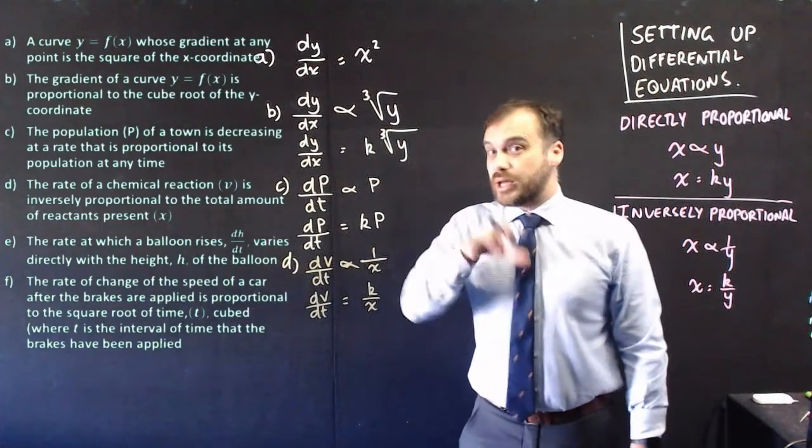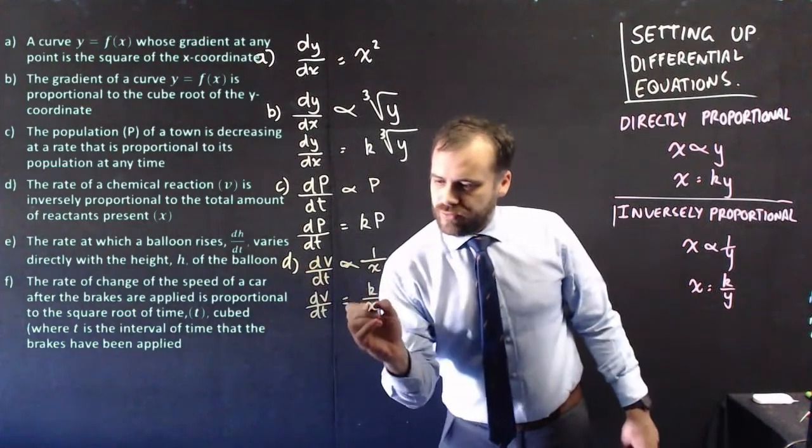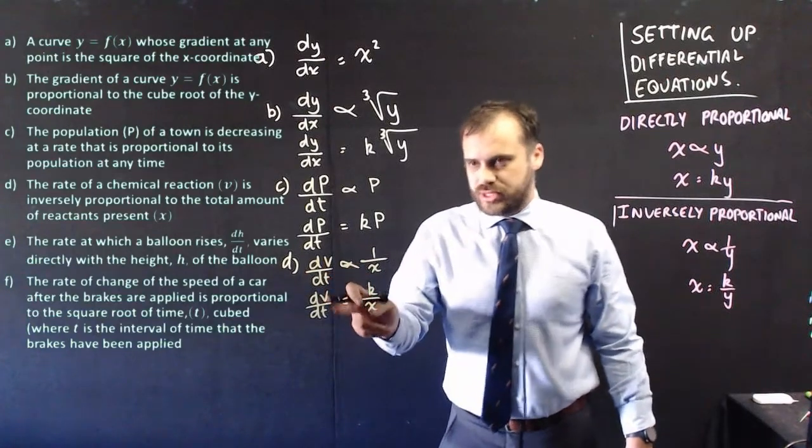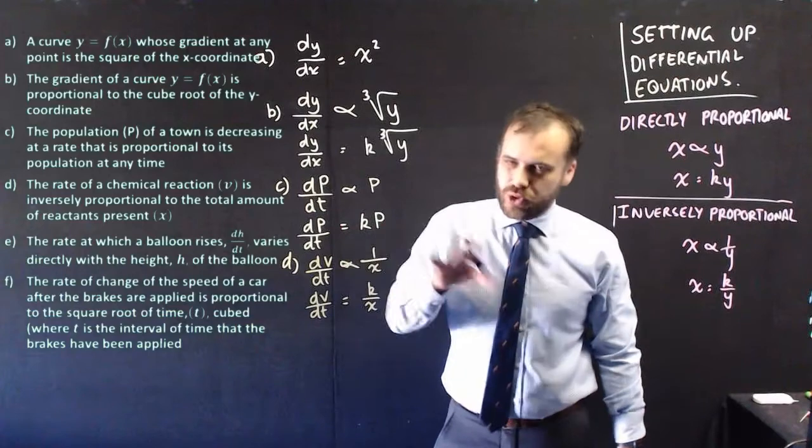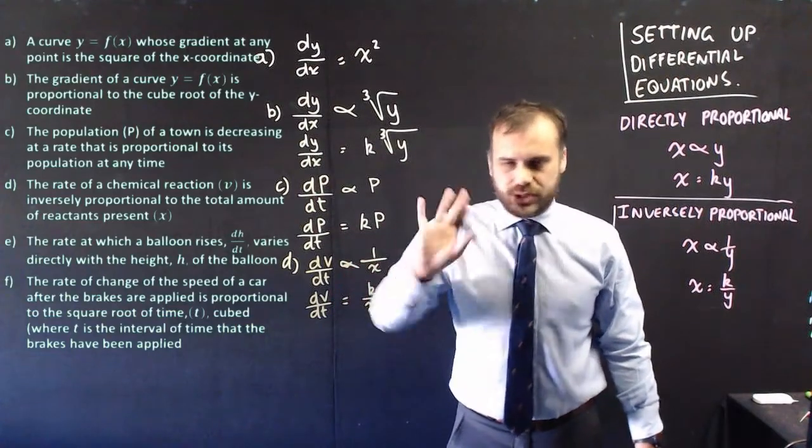All right, I find this one a little bit strange because it's dv dt, but our variable here, x, is neither v or t. Okay, so we'd have some work to do here if we were differentiating that, but we don't have to do that. We're just setting up the equation.